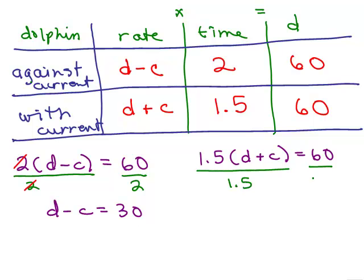Divide both sides by 1.5 so that the 1.5's cancel. And then I have to do 60 divided by 1.5. So you can use your calculator. You could use long division but you should get d plus c equals 40.